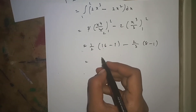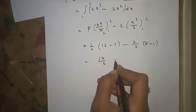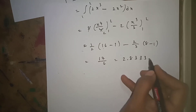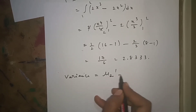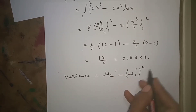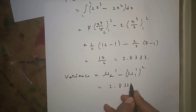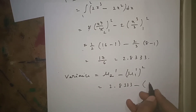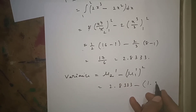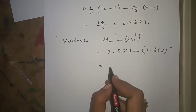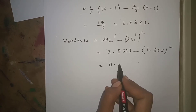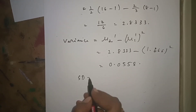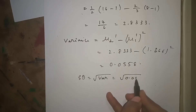Evaluating the integral gives μ'_2 ≈ 2.8333. Variance = μ'_2 − (μ'_1)² = 2.8333 − (1.666...)² = 2.8333 − 2.7778 ≈ 0.0556. The standard deviation is √variance = √0.0556.